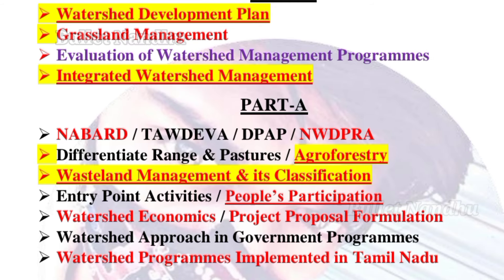Wasteland management and its classification — very important, first preference. Wasteland concept. Sometimes the brief question is wasteland management. People's participation. Watershed economics. Agroforestry. Watershed concept — 50 units. Wasteland, grassland, wasteland — sometimes maximum 15 units. Some important questions next.